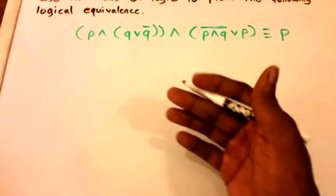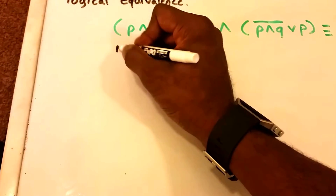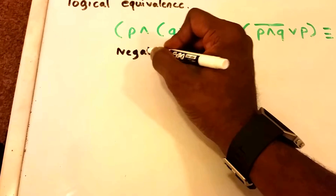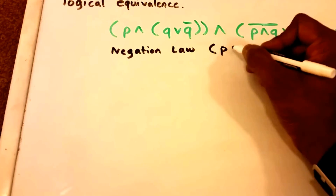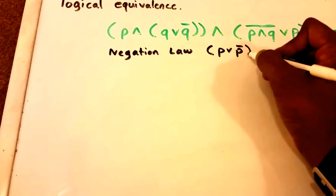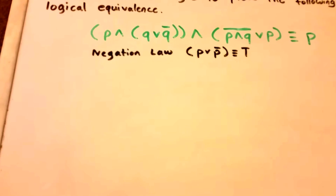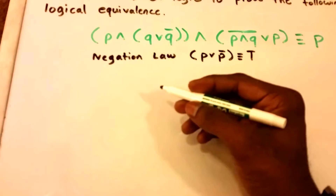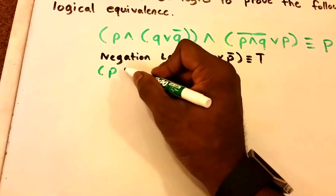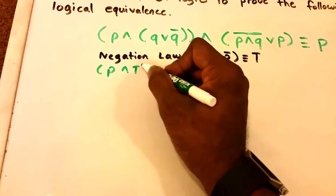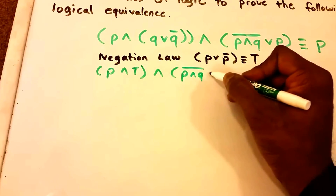Let's go ahead and prove this using laws of logic. First, we're going to use the Negation Law. The Negation Law basically says P ∨ ¬P is logically equivalent to True. So we rewrite and get: P∧True ∧ ¬P∧Q ∨ P.